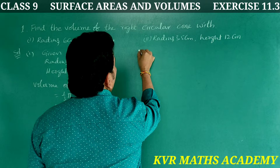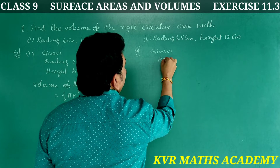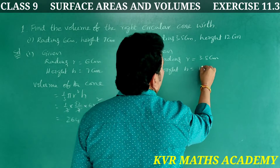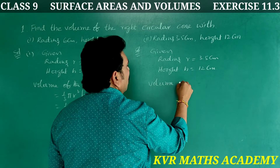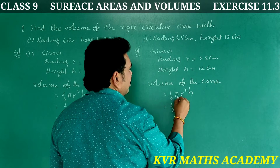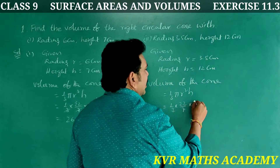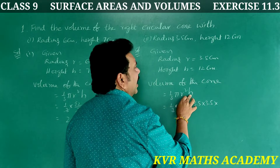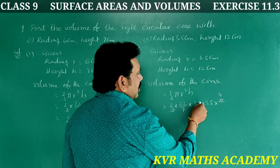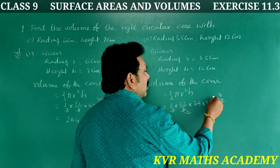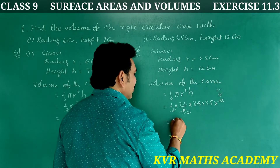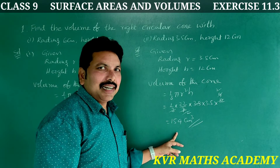Second sub-part. Given: radius r = 3.5 cm, height h = 12 cm. Volume of the cone = (1/3)πr²h = (1/3) × (22/7) × 3.5 × 3.5 × 12. After cancellation, 3.5 divided into 7 gives 2 times, and 3 into 12 gives 4. The result is 154 cm³.